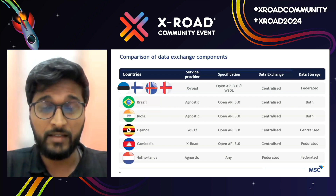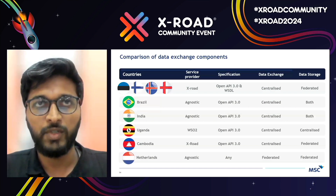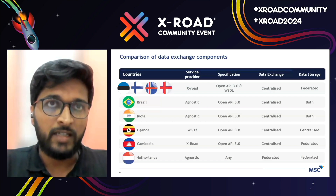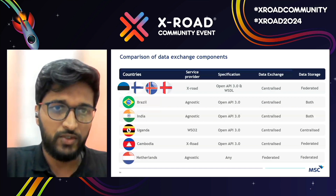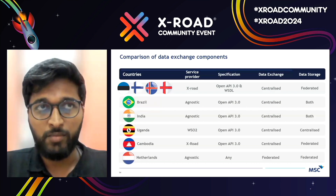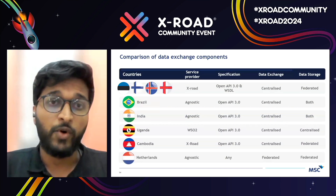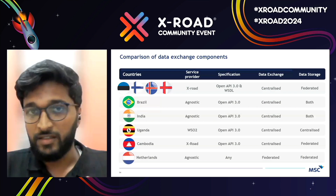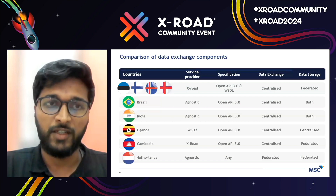Netherlands has a federated point-to-point architecture where each data consumer and data provider connect separately. This is because the Netherlands government believes that any business-to-business or business-to-citizen transaction should never be interfered with by government, as that would be market distortion. So two things play an important part in any data exchange architecture: the philosophy of the country and the use case of that country.